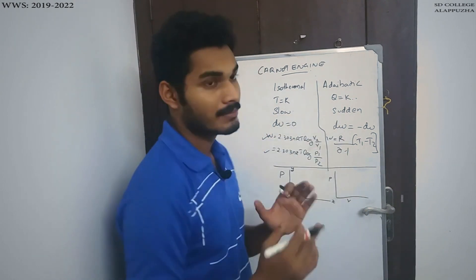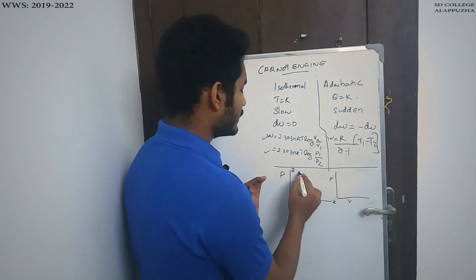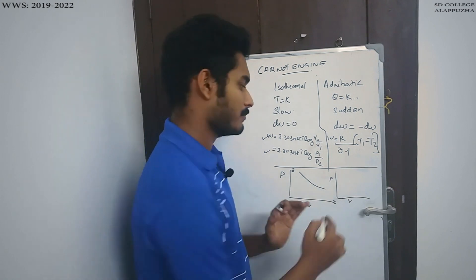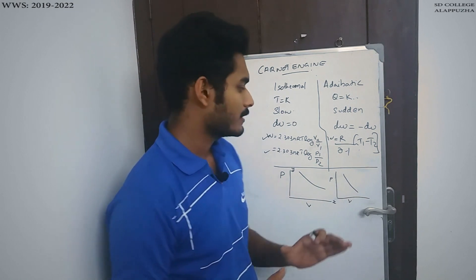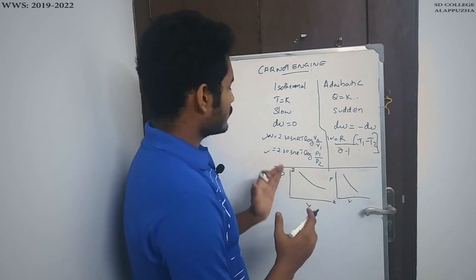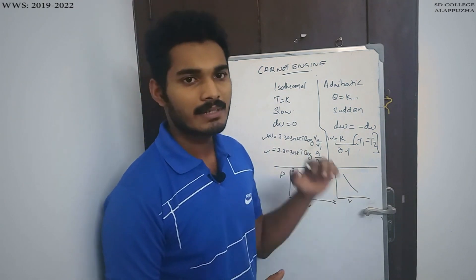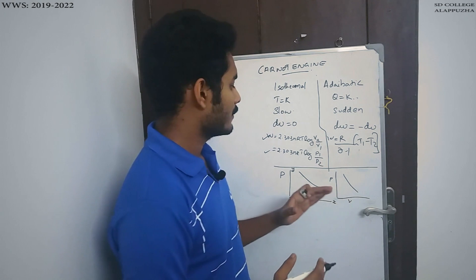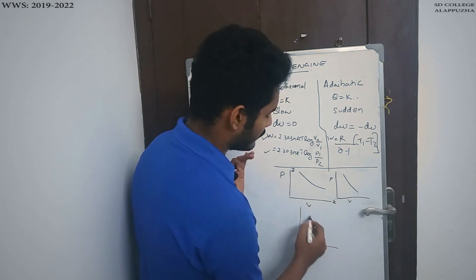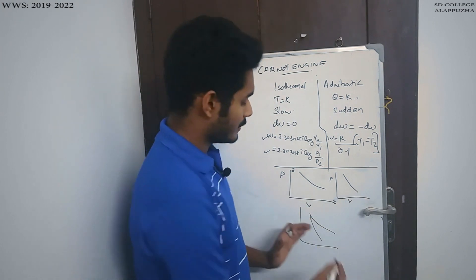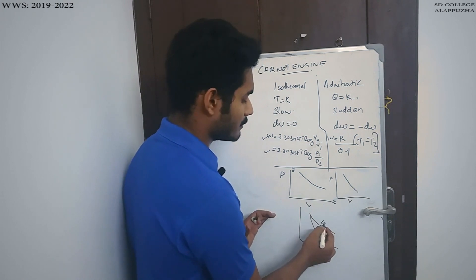We can represent the adiabatic and isothermal processes on a PV diagram. The slope of the adiabatic curve is steeper than the slope of the isothermal curve. The adiabatic slope is greater than the isothermal slope.